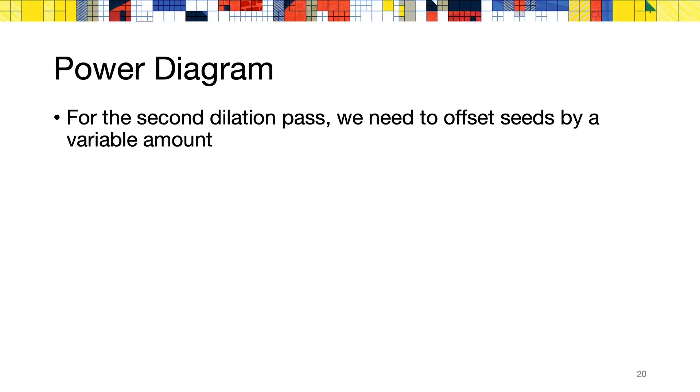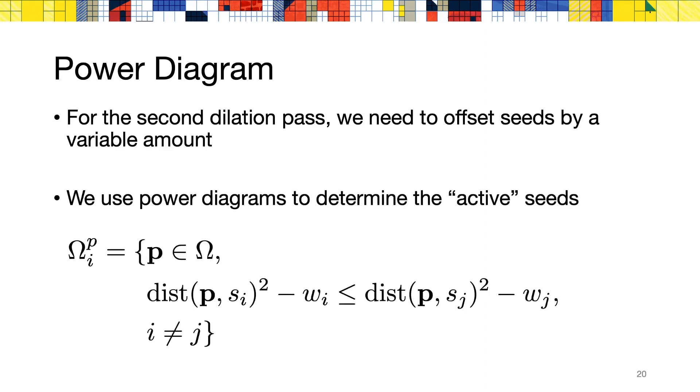In order to dilate each seed by a variable amount, we modify our previous sweep line algorithm to account for the difference in target radius for every seed. In practice, this means that we now need to consider a power diagram, instead of a Voronoi diagram, in order to partition the 2D plane of each slab where the second dilation will occur.